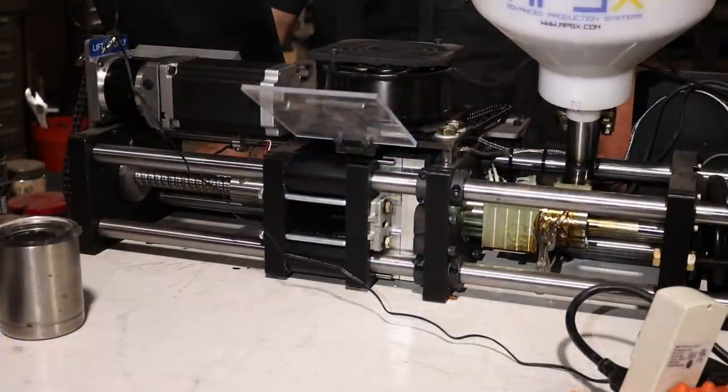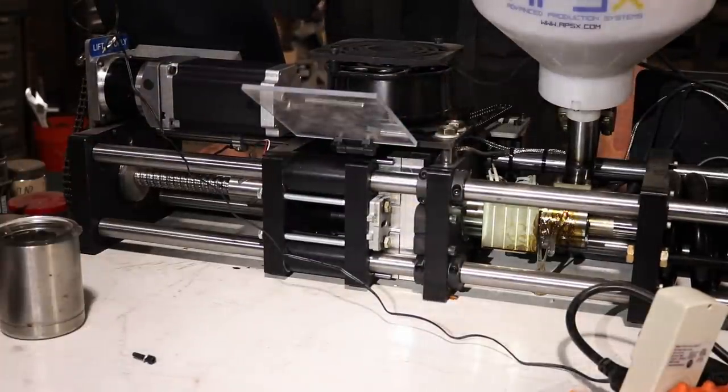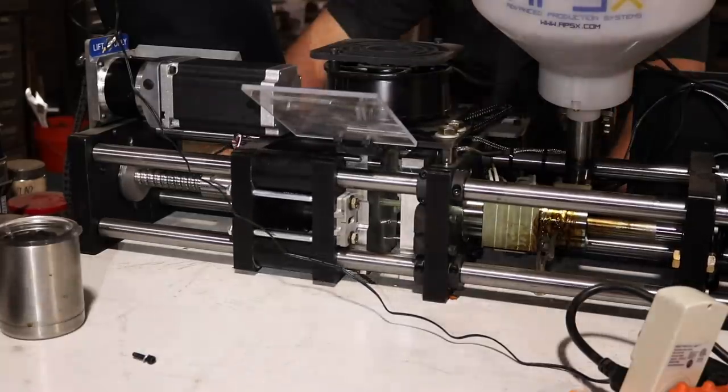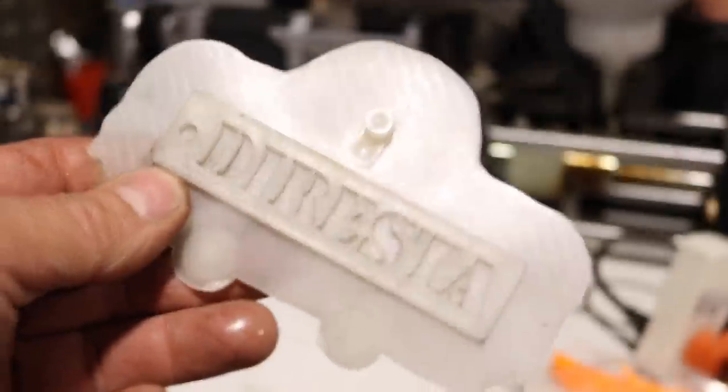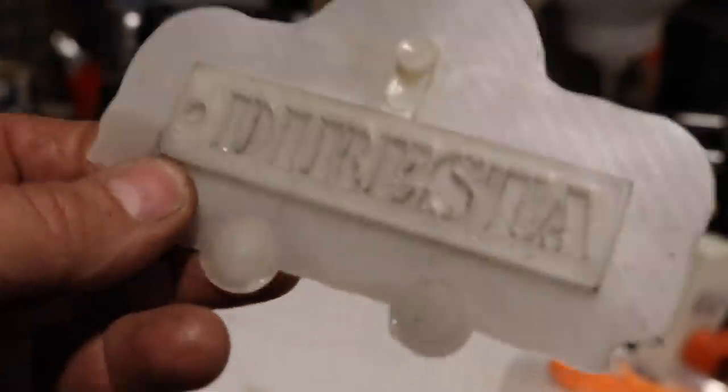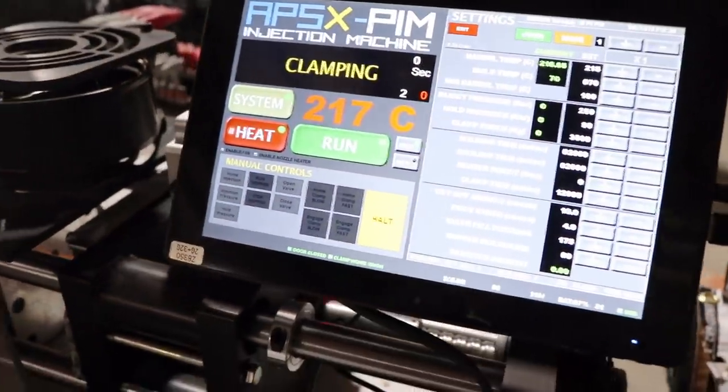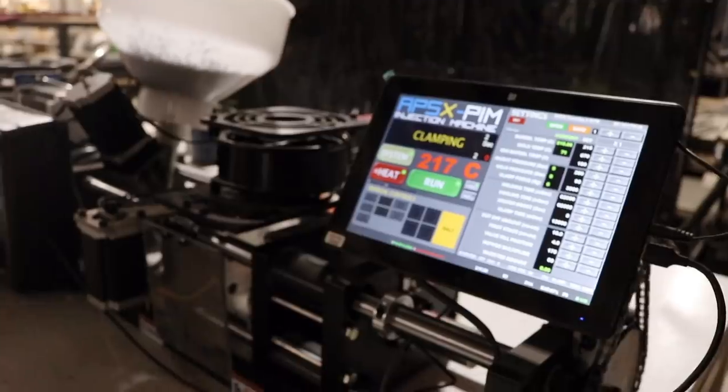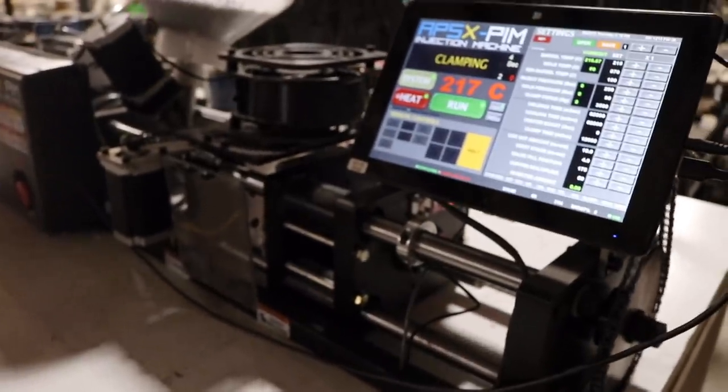Now the first couple of test shots are going to have clear polypropylene in it. You see it squirting out of the relief valve there on the machine. Once it finally gets hot enough, this is our first test shot, and we were just getting acclimated to the machine. That's the first test shot in clear—we had to run a few shots to get the clear out of the system.